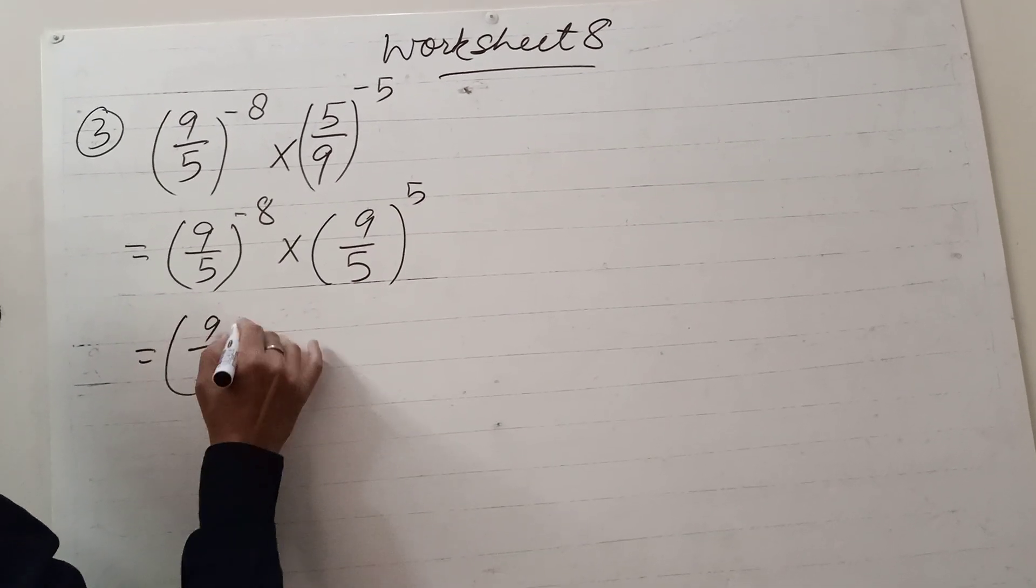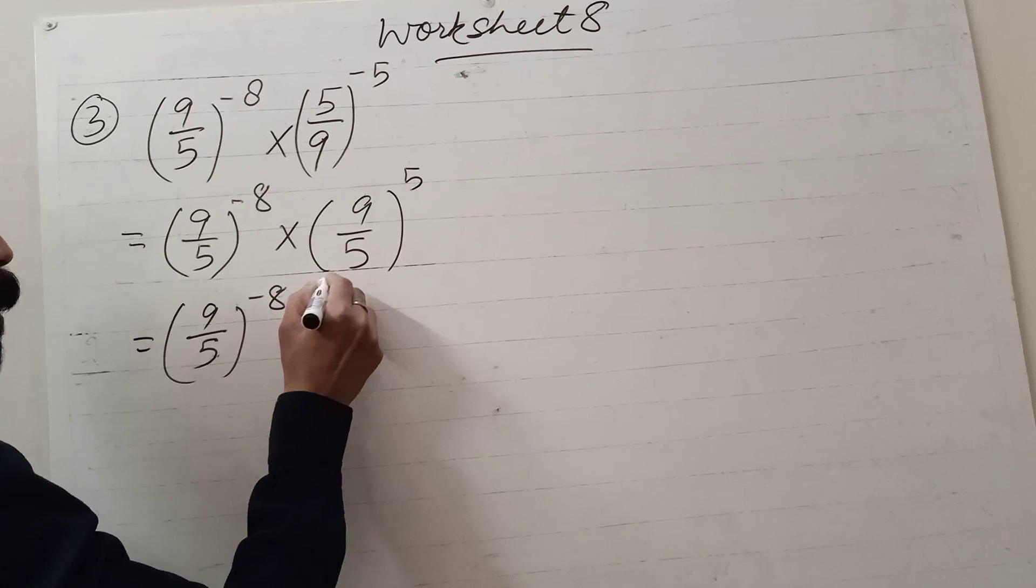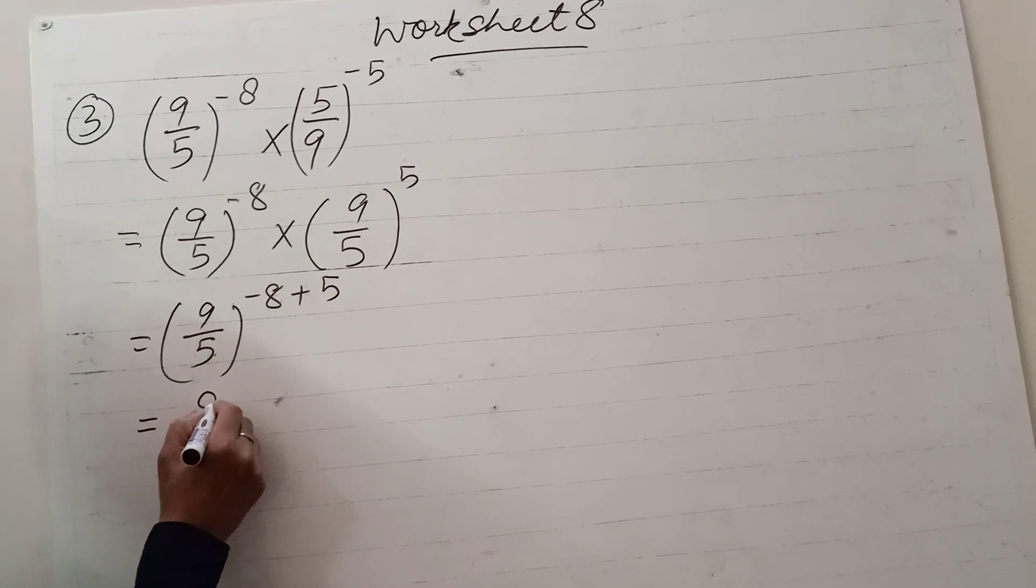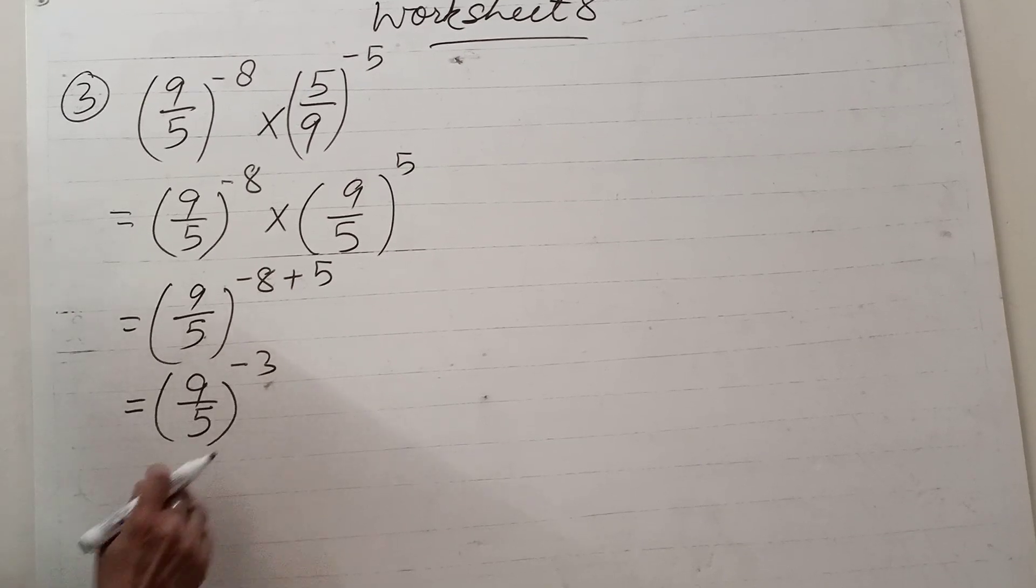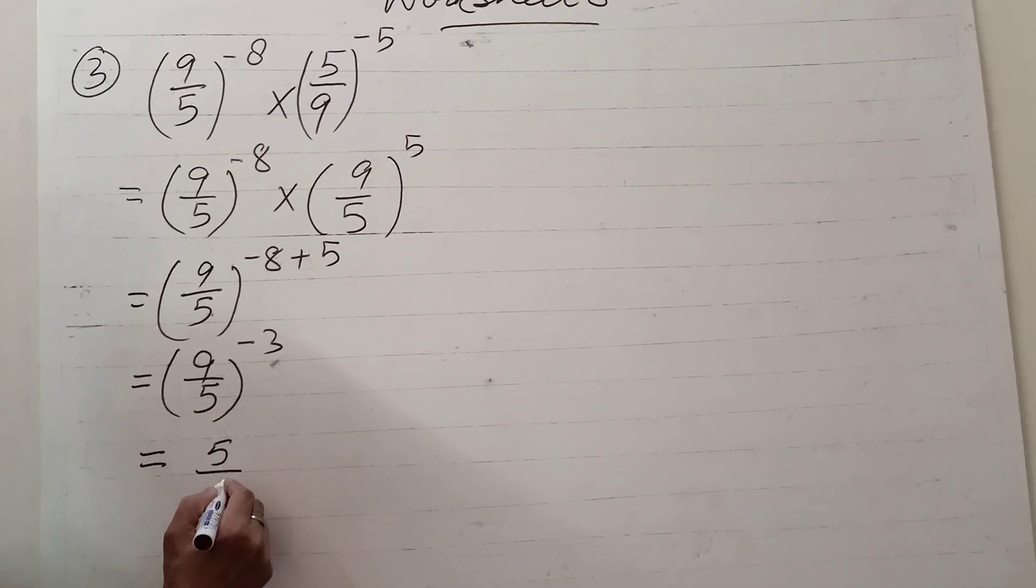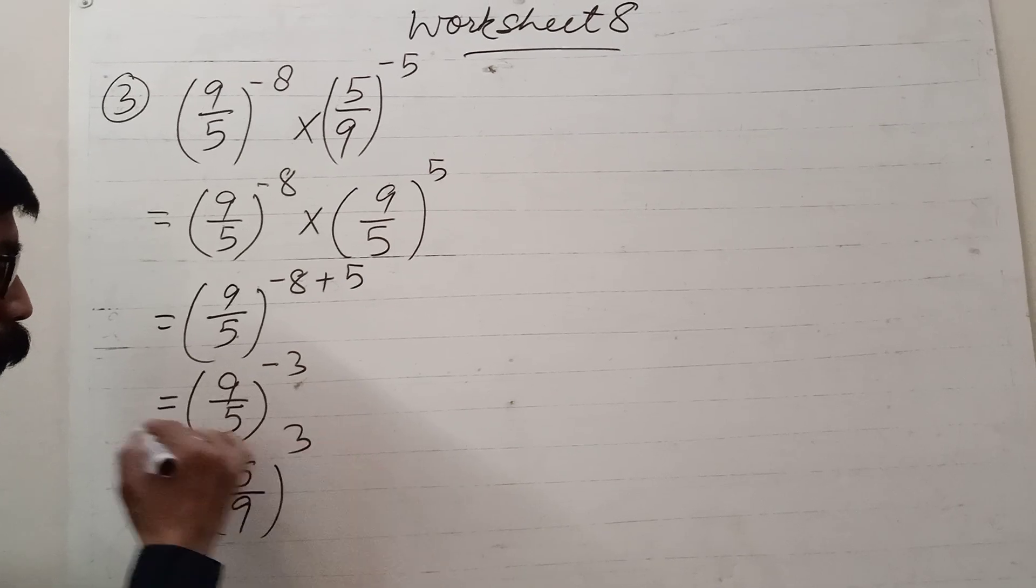So, (9/5) to the power minus 8 plus 5. That is (9/5)^-3. Now, to make it positive, (5/9)^3.